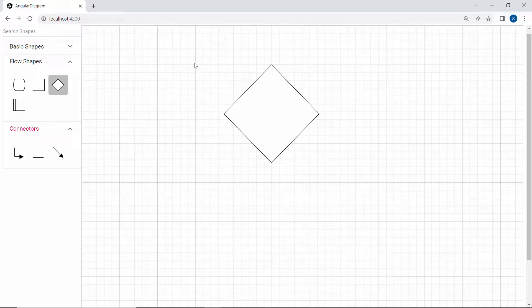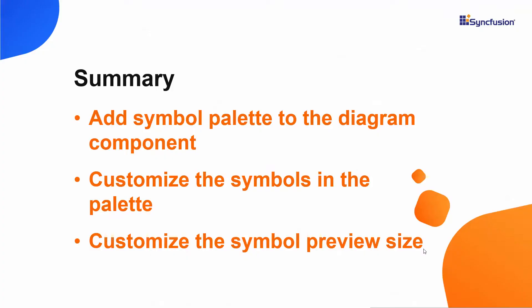In this video, we saw how to add the symbol palette and customize its symbol size and symbol preview size. Also, you can add descriptions for the symbols using the getSymbolInfo method. If you would like to see a working example, you can download one from the GitHub link shared in the description below. I have also included a link in the description where you can check if you qualify for our community license, giving you a free license key for our entire Angular suite. If you found this video useful, don't forget to click the like button and subscribe to our channel to watch more videos like this.